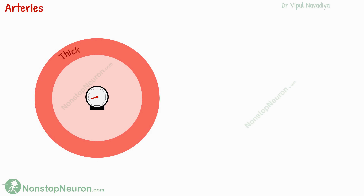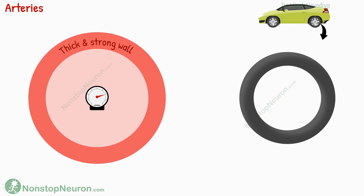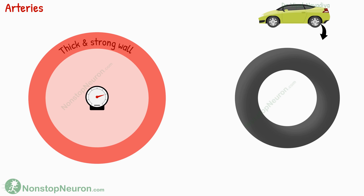Arteries have thicker and stronger walls, so even with a large increase in pressure, they don't distend as much. They are like tubes in tires — when you fill them, the volume rise is small but the pressure rises much. In short, arteries show less increase in volume with the increase in pressure, and thus they have less compliance.